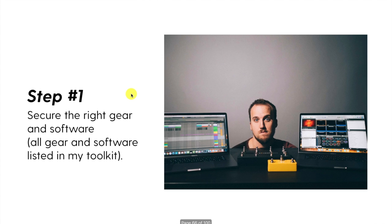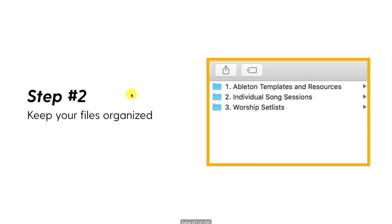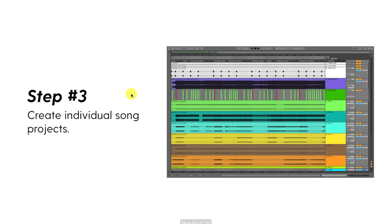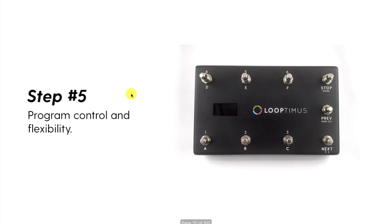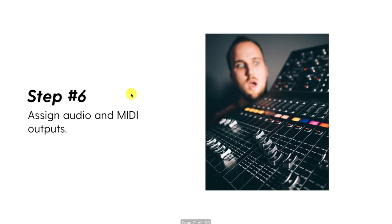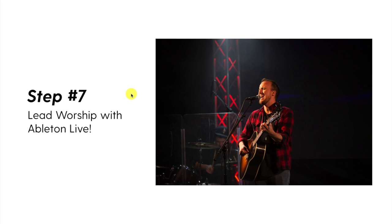Step one: secure the right gear and software. Step two: keep your files organized. Step three: build out those individual song projects. Step four: build your weekly setlist project. Step five: program, control, and flexibility. Step six: assign audio and MIDI outputs. Step seven: lead worship with Ableton Live — you're ready to go and ready to take advantage of the benefits of this software.